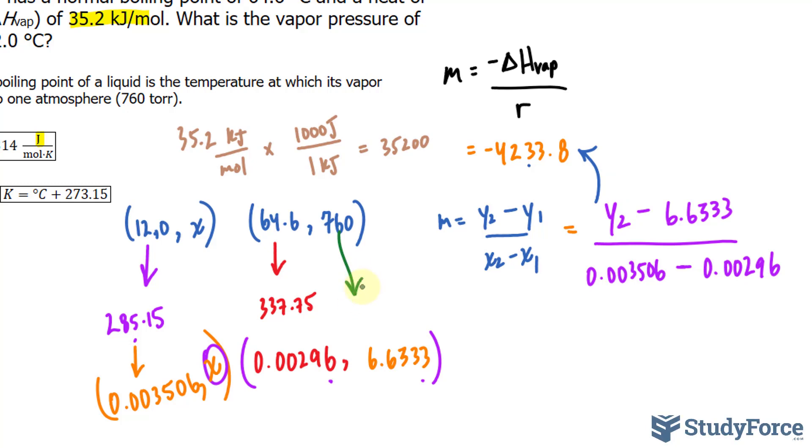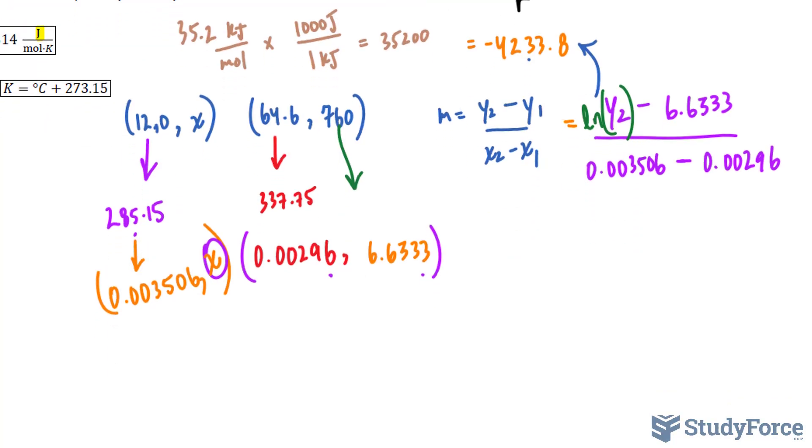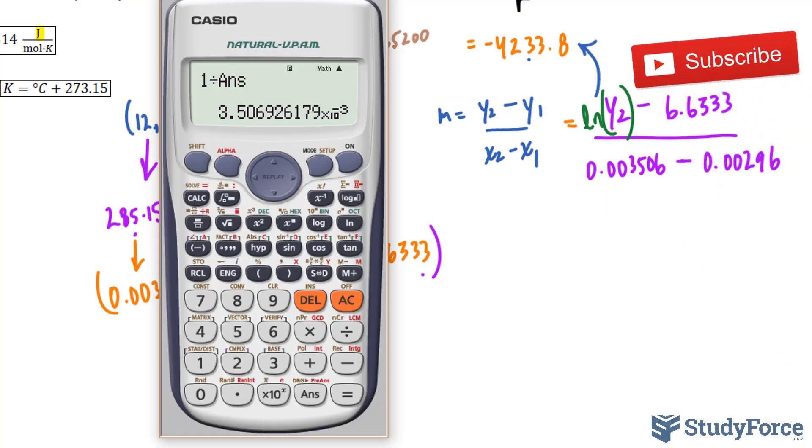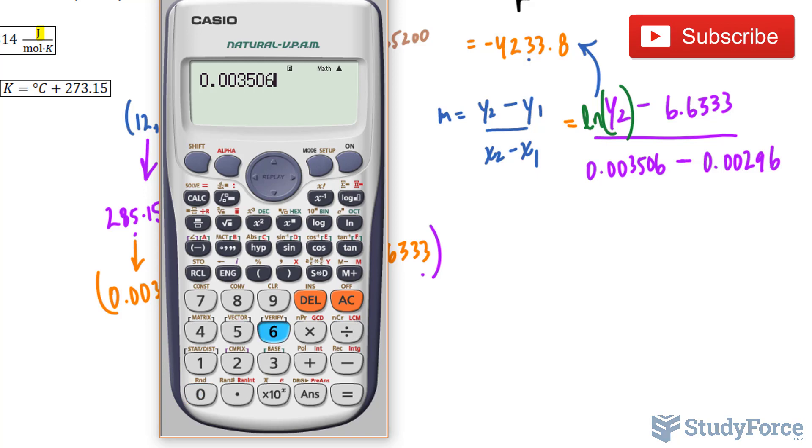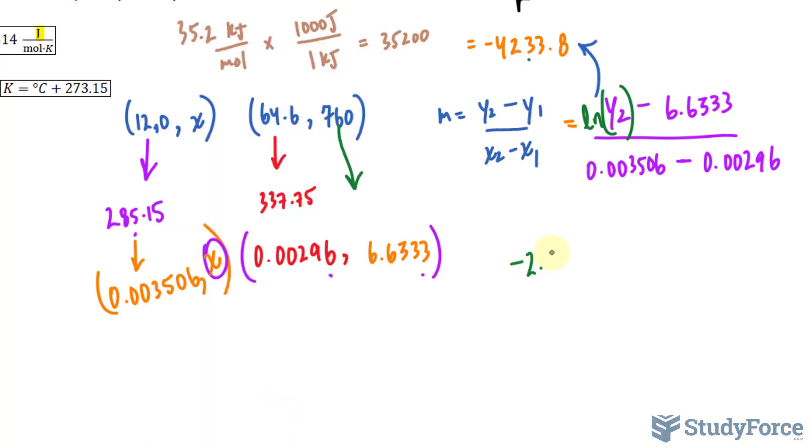Now keep in mind that we took the natural log of that, so technically this should be ln y2. A lot of work, but we're getting there. To solve for y2, first I need to combine these and multiply both sides of the equation by their difference. So 0.003506 minus 0.00296, and I'll multiply that by negative 4233.8, and I have negative 2.3116. That's the left side of the equation, and on the right side I still have ln y2 minus 6.6333.